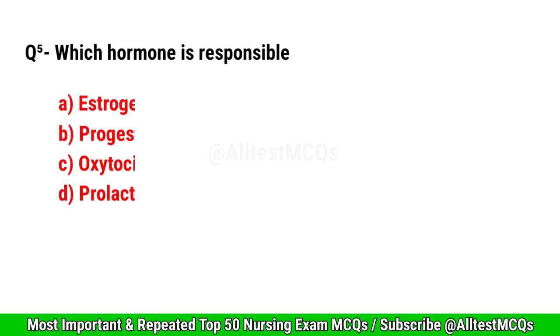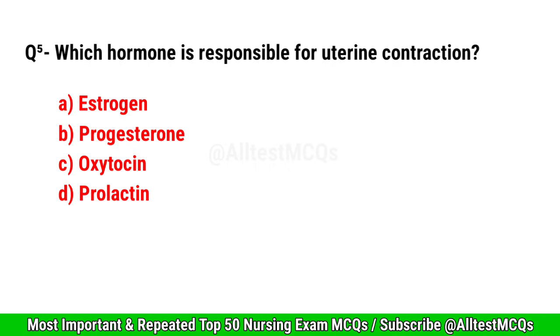Question No. 5. Which hormone is responsible for uterine contraction? Correct option is C. Oxytocin.